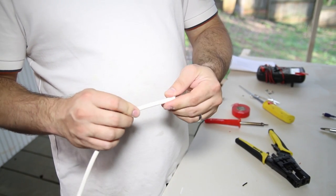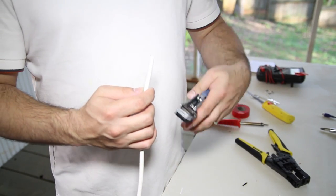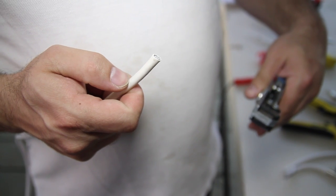Now that I have a clean piece of wire, I'm going to take a special pair of cable strippers and strip off the outside coating.